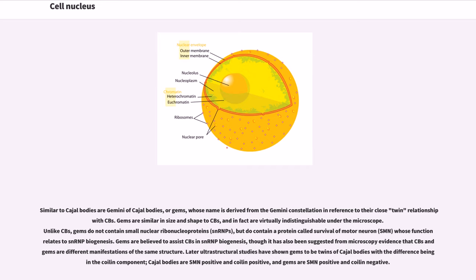Similar to Cajal bodies are gemini of Cajal bodies, or gems, whose name is derived from the Gemini constellation in reference to their close twin relationship with CBs. Gems are similar in size and shape to CBs, and in fact are virtually indistinguishable under the microscope. Unlike CBs, gems do not contain small nuclear ribonucleoproteins, snRNPs, but do contain a protein called survival of motor neuron, SMN, whose function relates to snRNP biogenesis. Gems are believed to assist CBs in snRNP biogenesis, though it has also been suggested from microscopy evidence that CBs and gems are different manifestations of the same structure. Later ultrastructural studies have shown gems to be twins of Cajal bodies with the difference being in the coilin component: Cajal bodies are SMN-positive and coilin-positive, and gems are SMN-positive and coilin-negative.